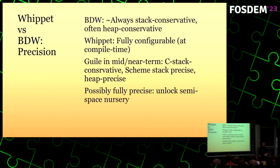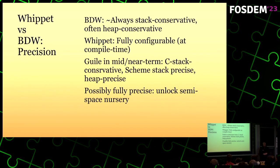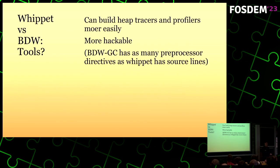With BDW you're always statically conservative — always scanning the stack for integers that could point to the heap, and often every edge on the heap is also conservative. With Whippet, we can configure it in a number of different ways. Where we're probably heading in the near-mid term is a conservative scan of the C stack, a precise scan of the Scheme stack, and a precise scan of the heap. So we'll be able to get the advantages of motion, compaction, and more. We could also move to a fully precise stack. BDWGC is also terrible to hack on — about 15-16% preprocessor directives, probably 90% of the code is covered by ifdefs.